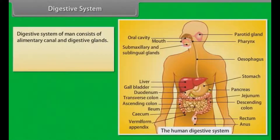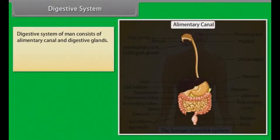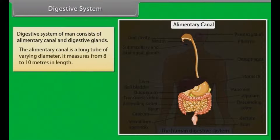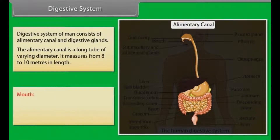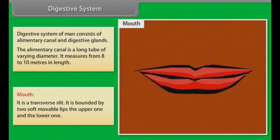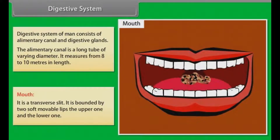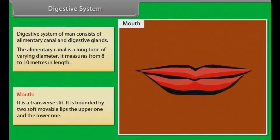Digestive system. The digestive system of a human consists of alimentary canal and digestive glands. The alimentary canal is a long tube of varying diameter. It measures from 8 to 10 meters in length. The first part of the alimentary canal is the mouth. It is a transverse slit.